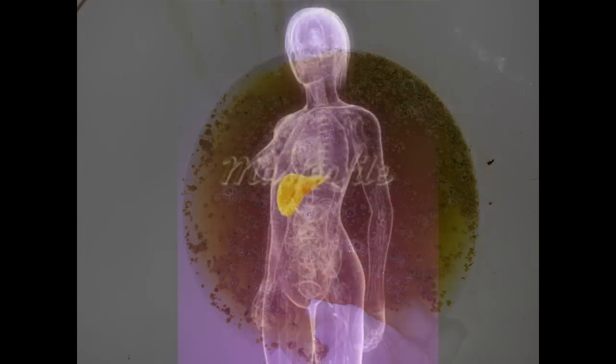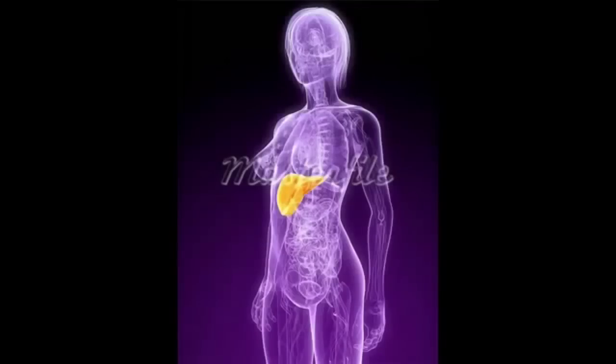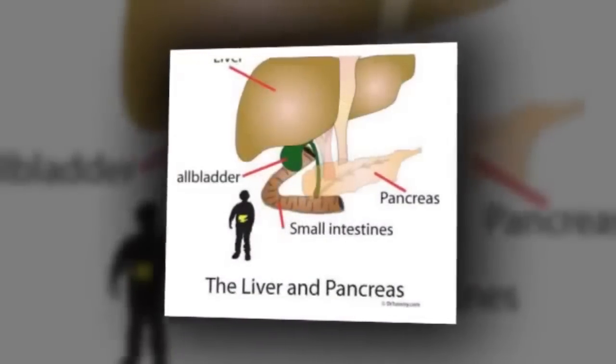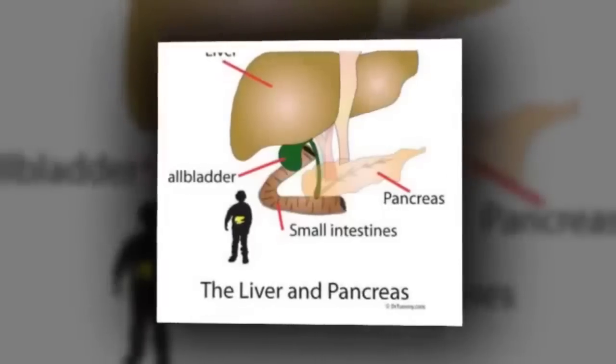It is out of biliary sludge that gallstones are formed. Gallstones and biliary sludge disrupt the normal flow of bile, causing three different types of problems. The first set of problems is related to not getting enough bile into the intestines. The second set occurs when toxins, unable to leave the body through the bile, back up and accumulate in the liver and bloodstream. The third set occurs when bile, unable to get into the intestines, backwashes into the pancreas and liver.